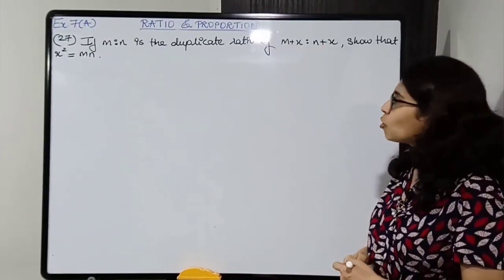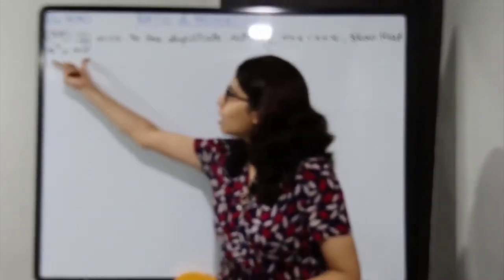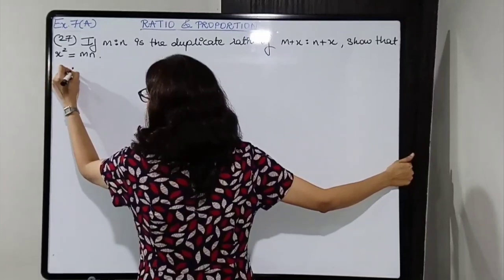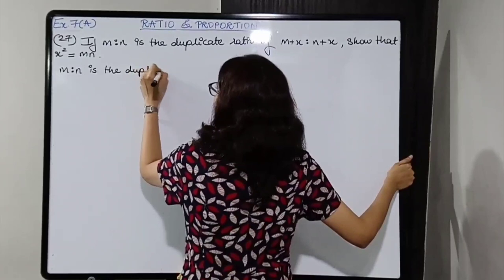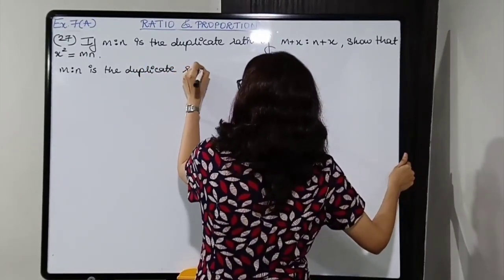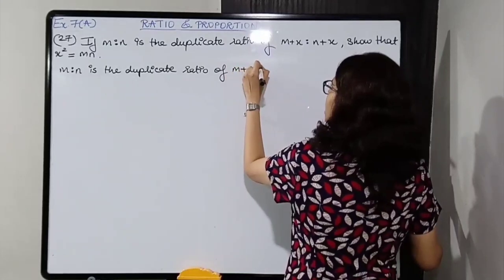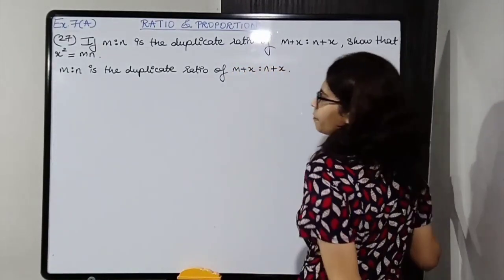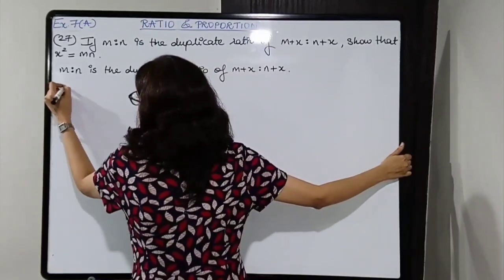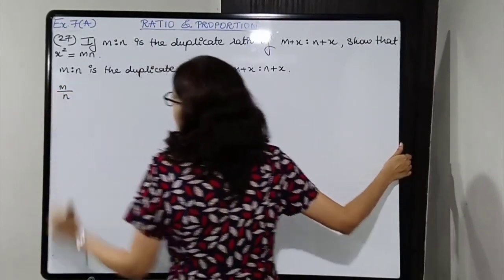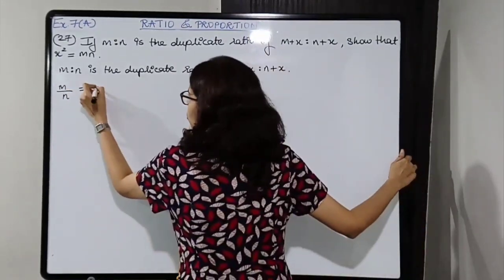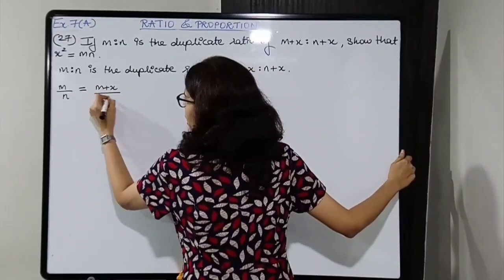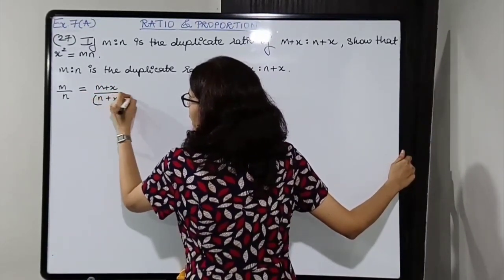Let's solve. We have to prove that x squared is equal to mn. Write down the given first: m is to n is the duplicate ratio of m plus x is to n plus x. So m upon n is equal to the square of m plus x upon n plus x.